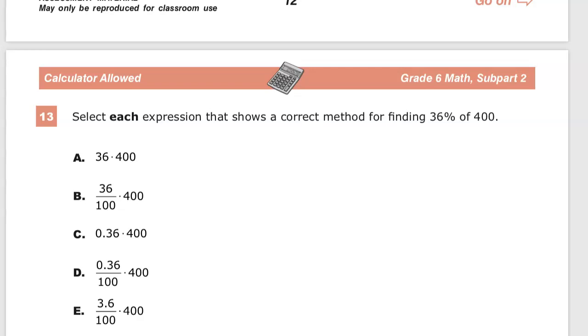This is the grade six math practice test for TN Ready. This is currently question number 13. The question says, select each expression that shows a correct method for finding 36% of 400.